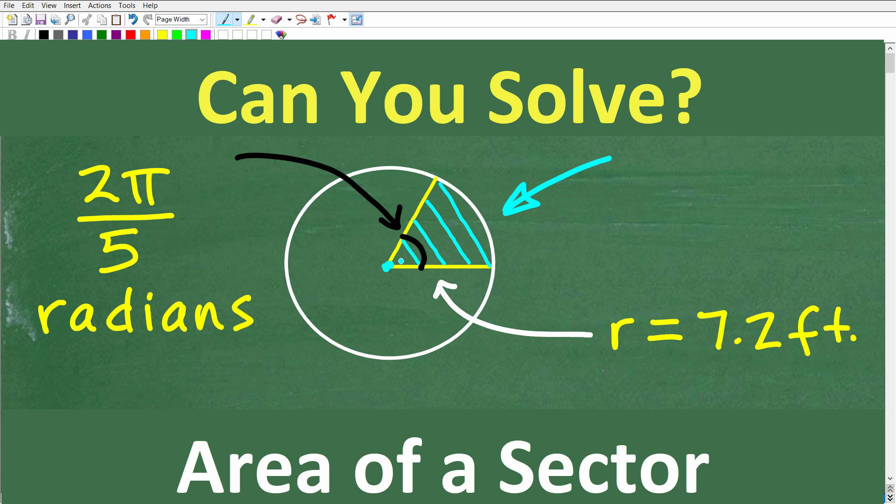The specific details of this problem: the central angle, which is this angle right here at the center of the circle, is 2π over 5 radians, and the radius is 7.2 feet. That is enough information to calculate the area of this particular sector.